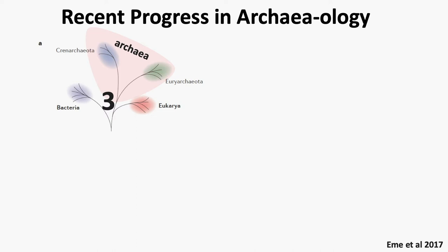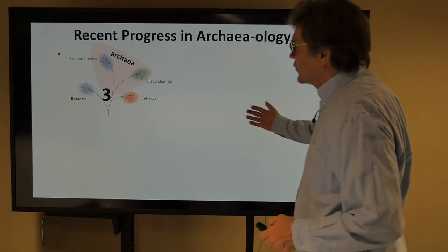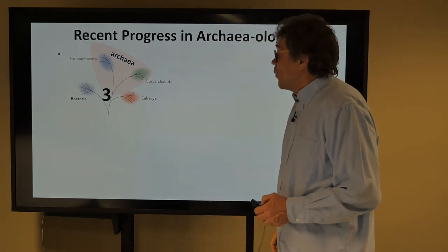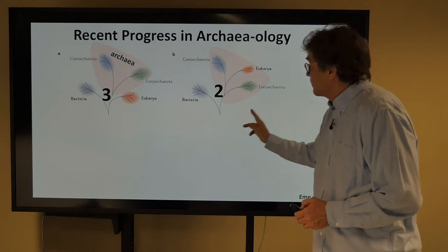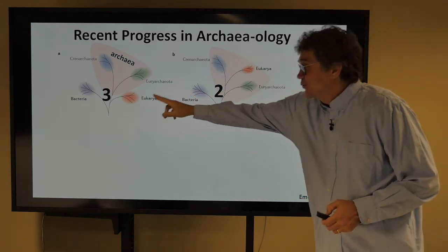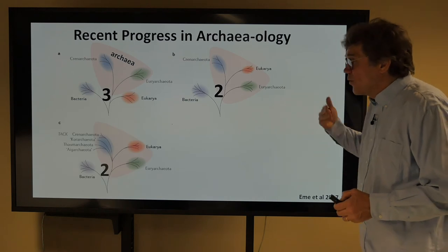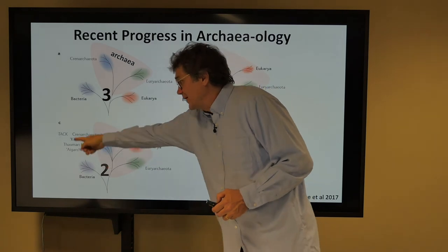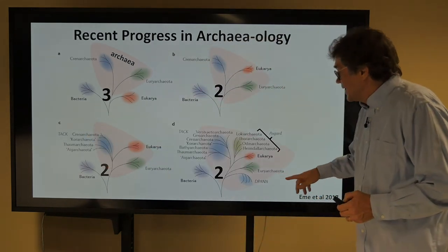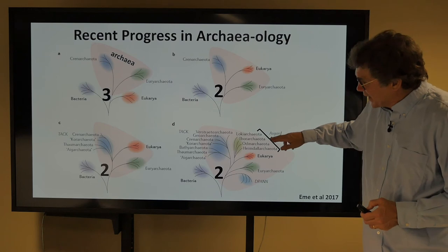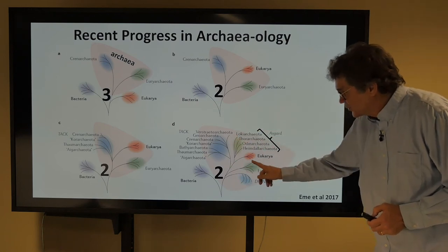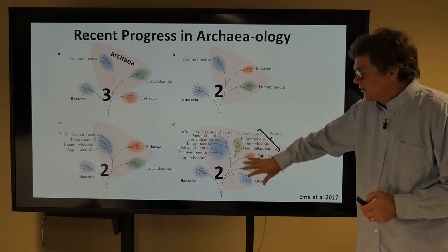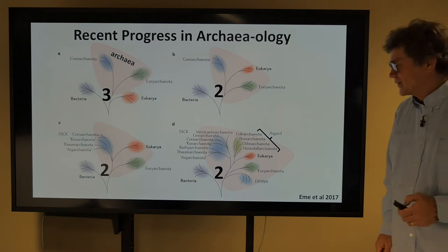Let's talk about recent progress in archaeology. Here are three domains: archaea, bacteria, and eukarya. Then the eukaryotes got put inside of the archaea, and three domains turned into two. More progress was made and we found all kinds of different types of archaea — for example, the TACK group. Then even more progress: the Asgards were found. They were the group closest branching to the eukaryotes — these are our closest relatives. Eukaryotes are well embedded in the archaea, and that's why we can call ourselves archaea.